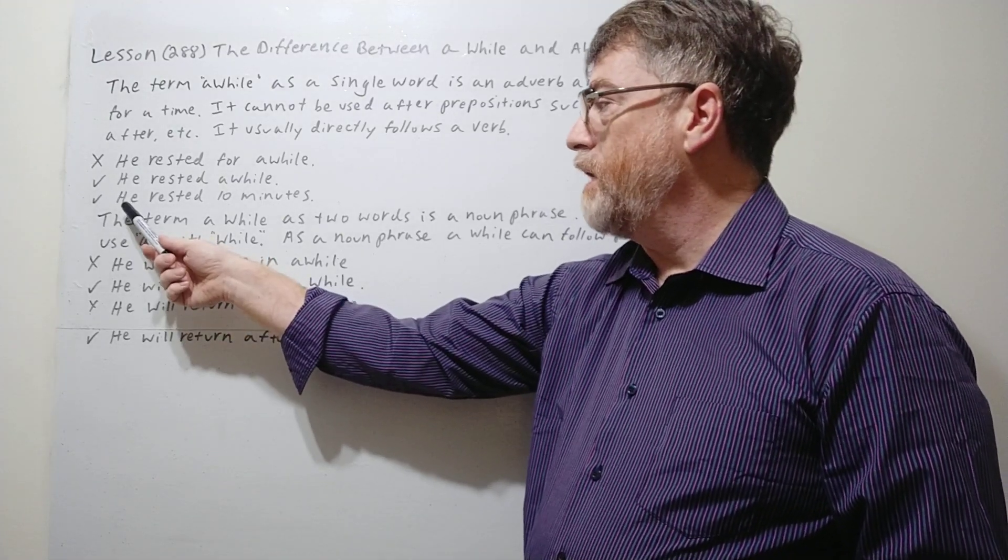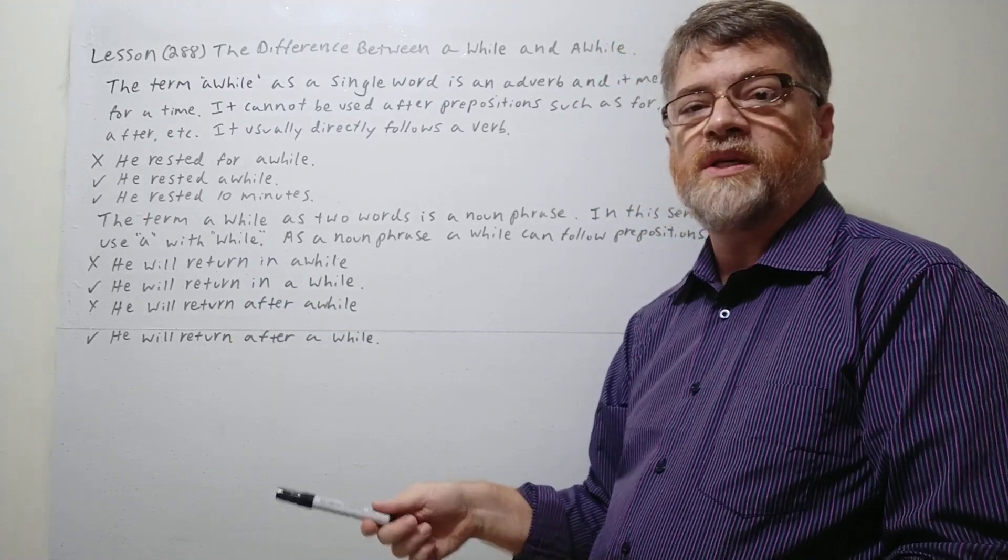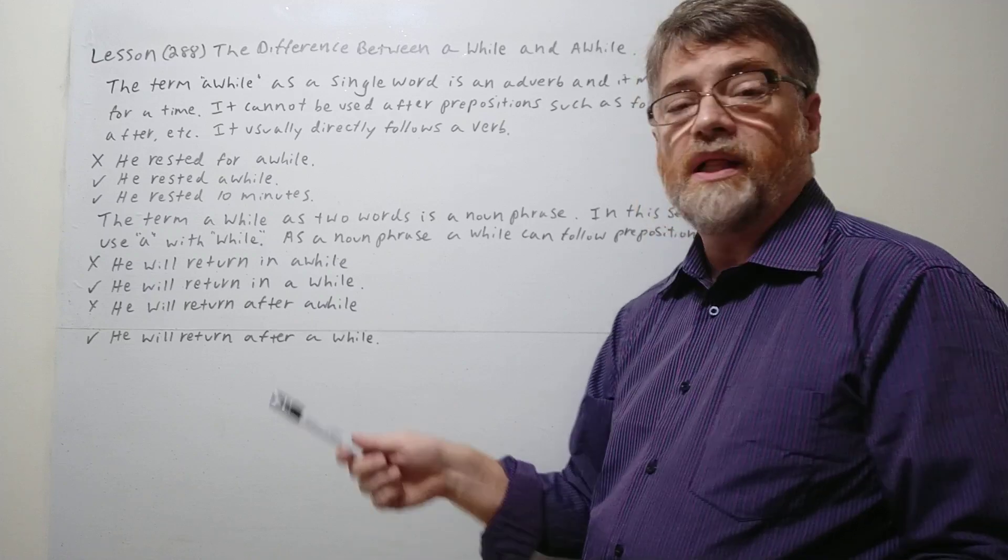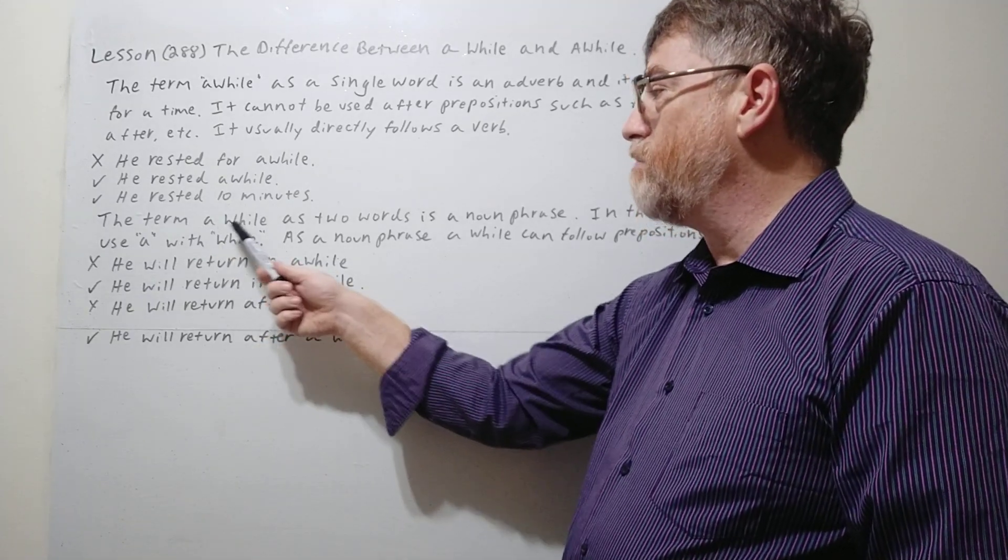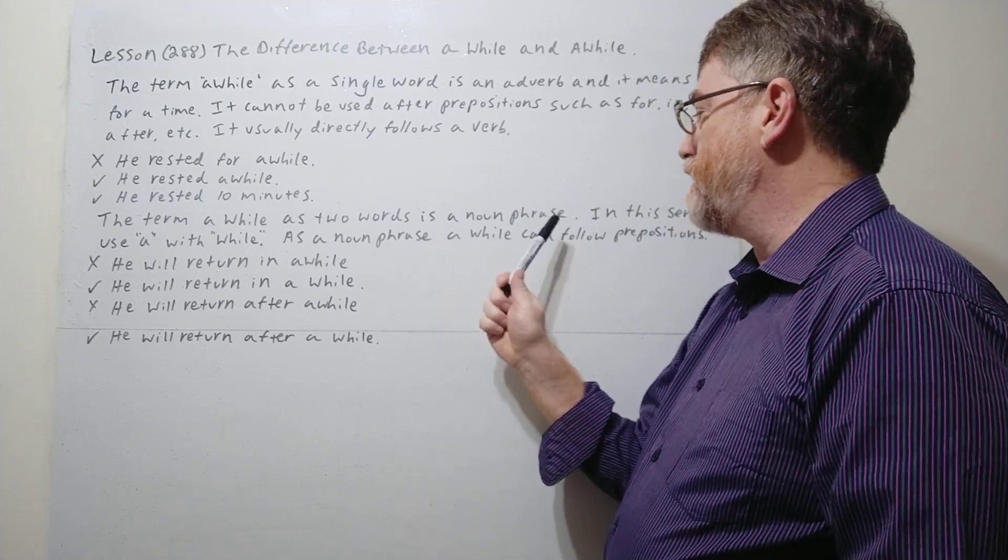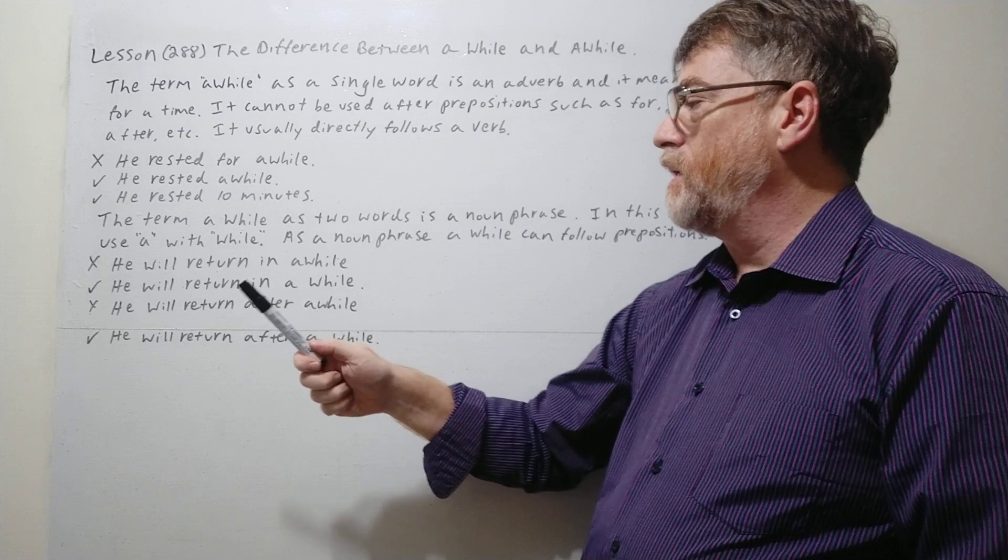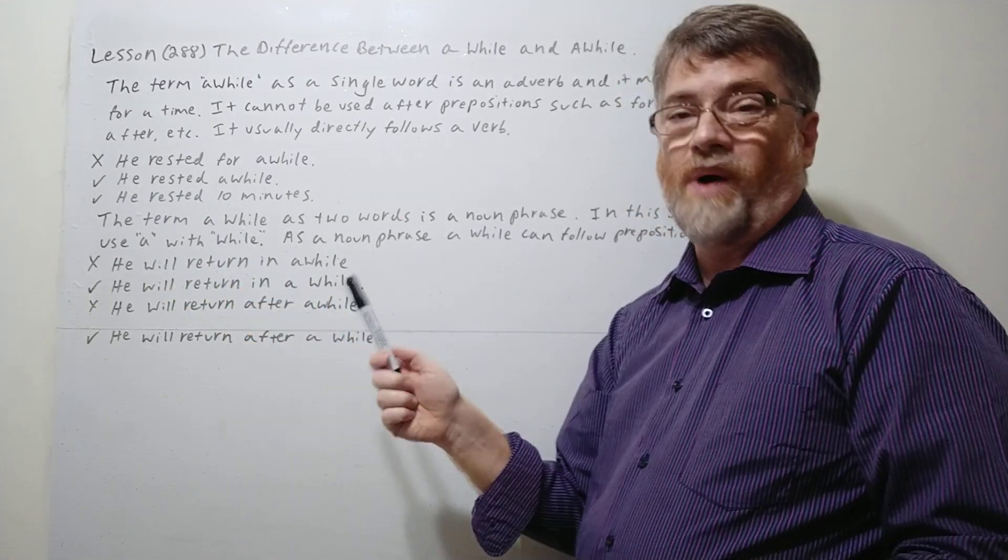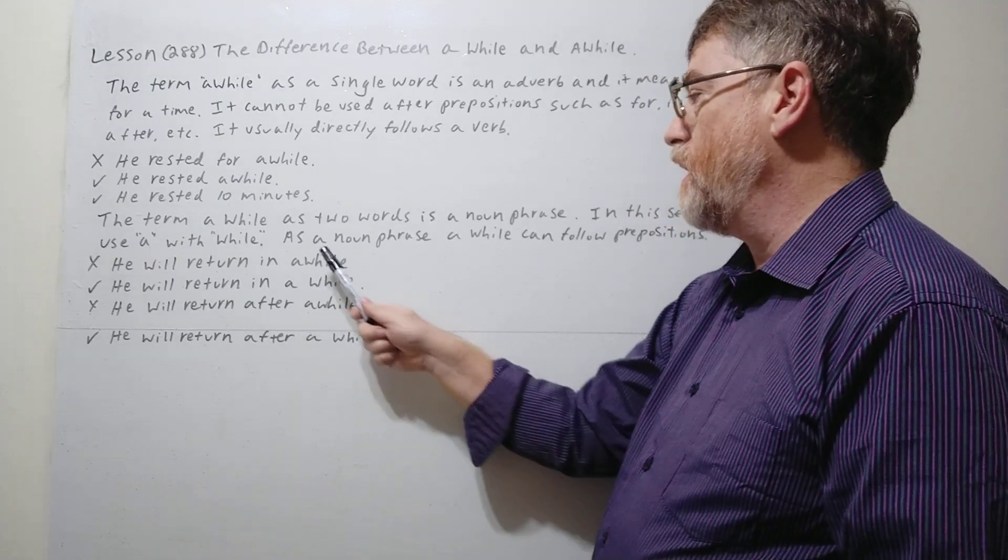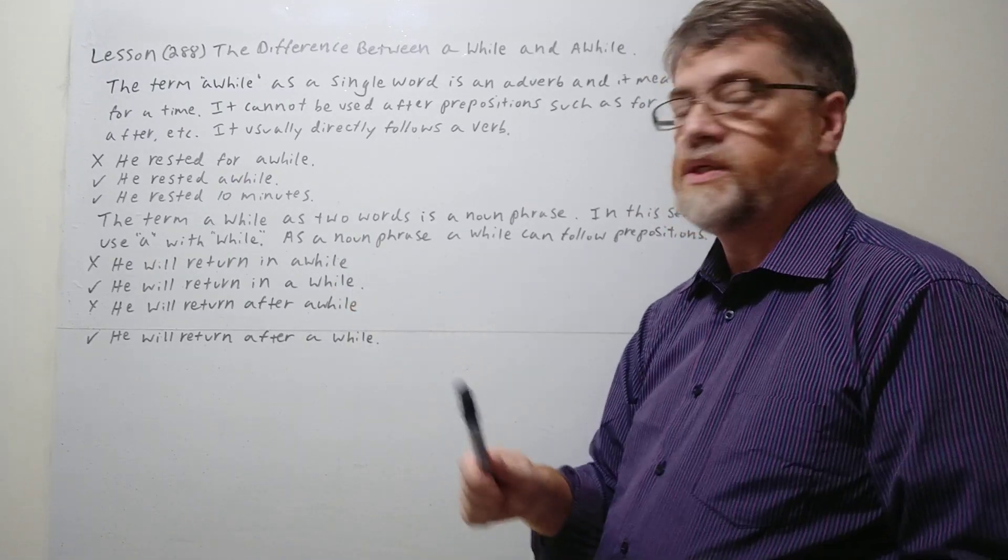The second one here: He rested for 10 minutes. It's just another way to show this period of time that he rested. The term a while as two words is a noun phrase. In this sense use a with while, so a has to go with while in order to be the noun phrase. As a noun phrase, a while can follow prepositions.